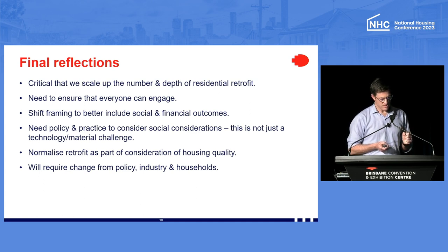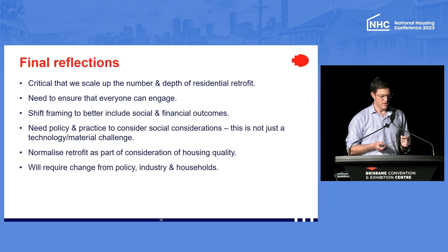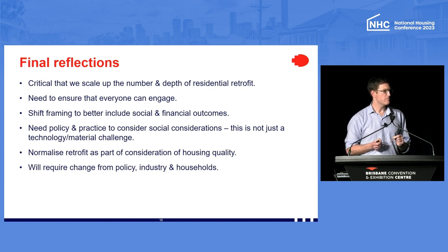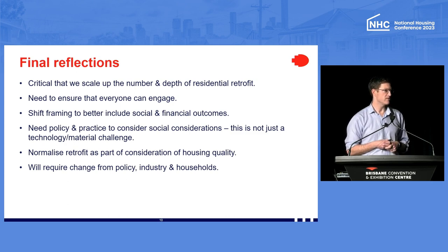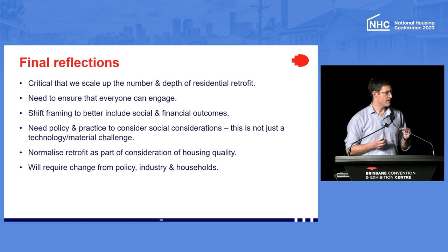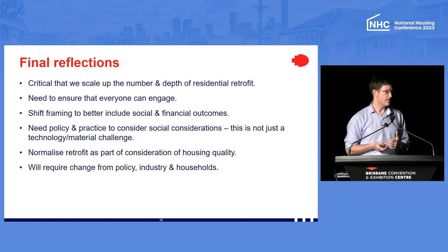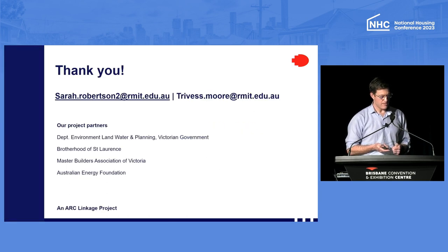On my final slide — one of the key things to think about is the need to shift our framing around retrofit to include the social and financial outcomes. That changes how we talk about retrofit — it's no longer just about environmental outcomes, but we're doing this to improve people's affordability, livability, health and wellbeing. Through this social consideration, we can start to normalise retrofit. No longer is it about how do we make our house more shiny and blingy, but actually how do we make it function better — not just now, but into the future? This is going to require change from everyone — from policy makers, from people in the industry, but also from households as well. Thank you for listening.